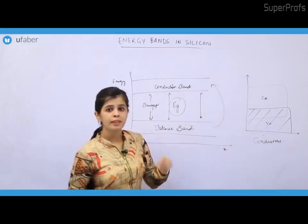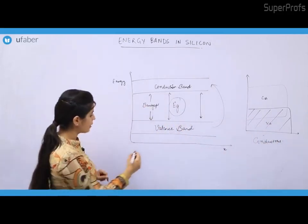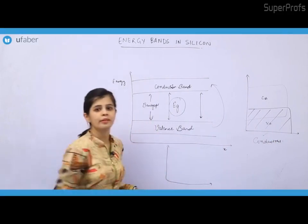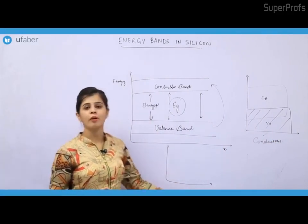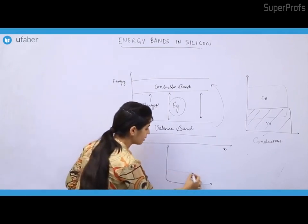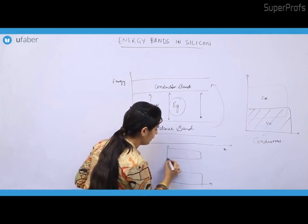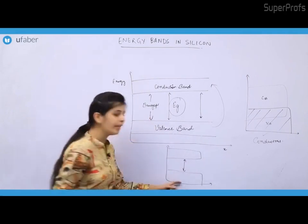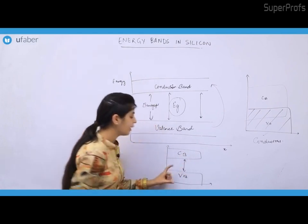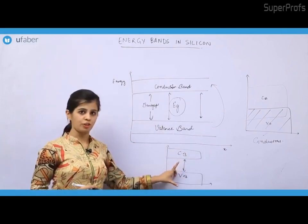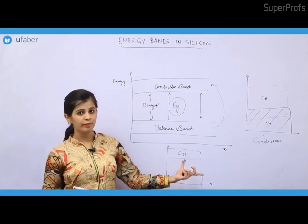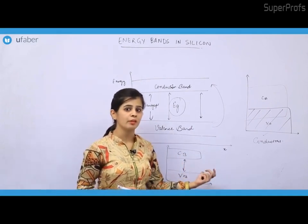Now, if I take one more case — that is the case of an insulator — if I draw the energy band diagram for an insulator, in that case the gap between the valence band and the conduction band is very large. It is not easy to overcome this particular gap in case of insulators.